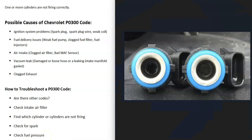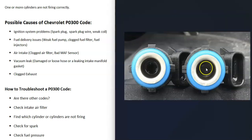If fuel pressure is good, the next likely cause is bad injectors. This is very common in Chevys — the injectors become clogged up with age. You can see in the image that the injector on the right is clogged with gunk, while the one on the left is new. A clogged injector restricts fuel going into that cylinder, which was directly causing a P0300 code. Fuel injectors are a very common problem with Chevys and this code.